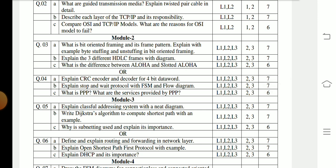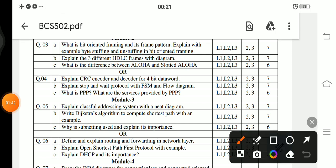Question number 3a: What is bit-oriented framing and its frame pattern? Explain with an example byte stuffing and unstuffing in bit-oriented framing. 3b: Explain the three different HDLC frames with the diagram. 3c: What is the difference between ALOHA and Slotted ALOHA?